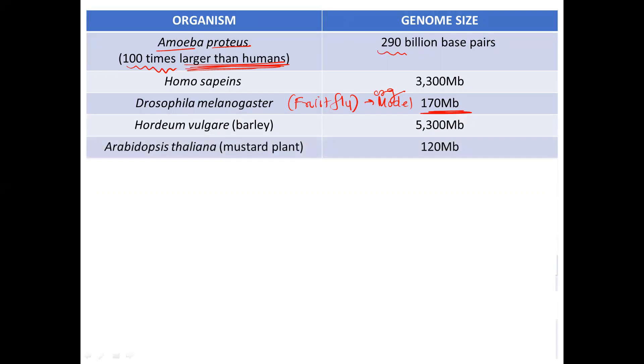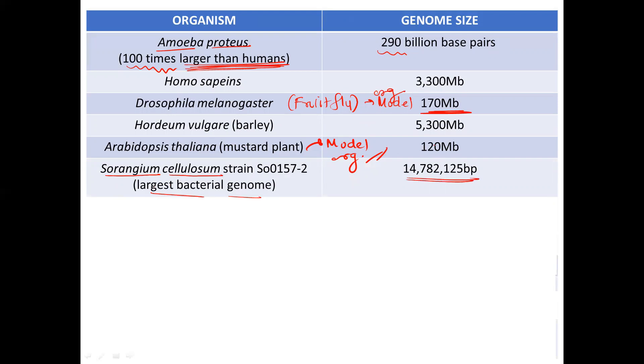Next we have Hordeum vulgare, that is barley, genome size 5,300 MB. Then Arabidopsis thaliana, again also called as a mustard plant, used as a very common model organism for plants. So many of the phenomenon were first discovered in this model organism, that is Arabidopsis thaliana. The genome is 120 MB. Next, the largest bacterial genome is of the strain Sorangium cellulosum, that is 14,782,125 base pairs.